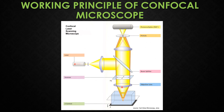The main effect of the scanning mirrors on the light is to generate a spot of light that appears stationary. A semi-transparent mirror reflects this fluorescent light away from the laser and towards the detection system. Before entering the detection system, the fluorescent light passes through a pinhole, which allows only a small central portion of the light through to the detectors.